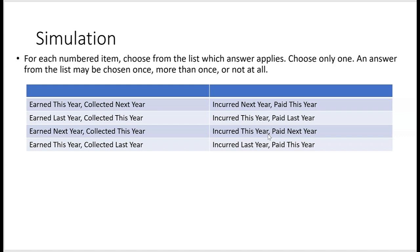What was incurred this year and paid next year? Those are accrued expenses and accrued liabilities — expenses incurred in the current year but not paid until next year. The adjusting entry at year end is a debit to an expense and a credit to a current liability. What was incurred last year and paid this year? That would be the beginning balance of accrued payable, because accounts payable at the beginning of the year was last year's expense paid this year.